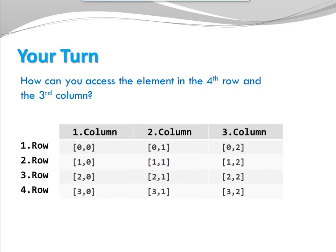Now it's your turn. How can you access the element in the fourth row, third column? Take a moment to think it through. Pause the video. When you're ready, press continue. So here you can see the fourth row, which is index three, and the third column, which is my index two. So we have to access index three, two.